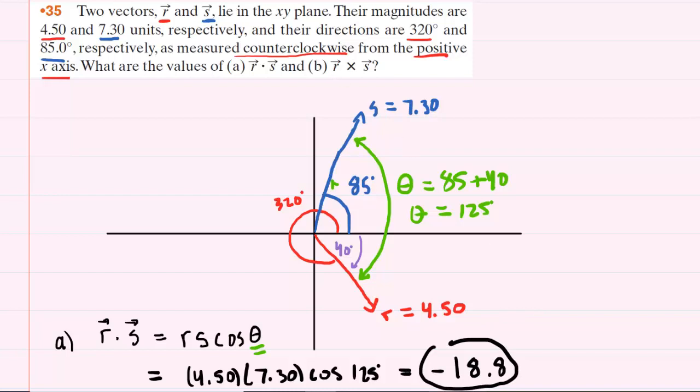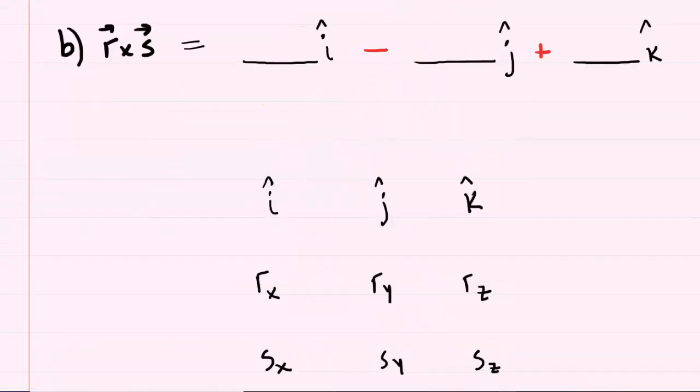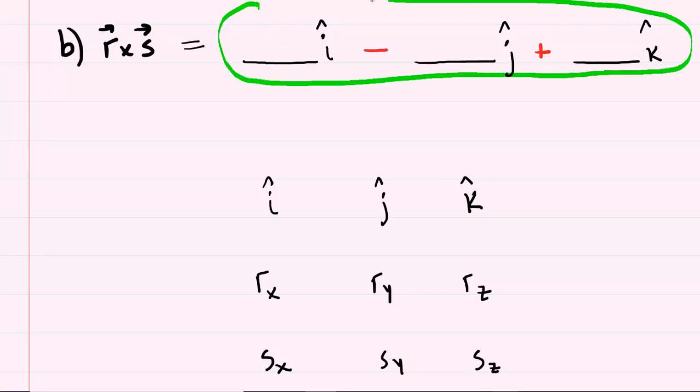Now, in part b, we're being asked for the cross product, which is a little bit trickier to find. Just like with the dot product, there are actually a couple of ways of finding the cross product. When you do a cross product, you want to begin by setting up this sort of template. We have the i-hat, j-hat, k-hat vector notation, and pay special attention to the signs between them. You're always going to have a minus sign between i-hat and j-hat, but then a plus sign between j-hat and k-hat.